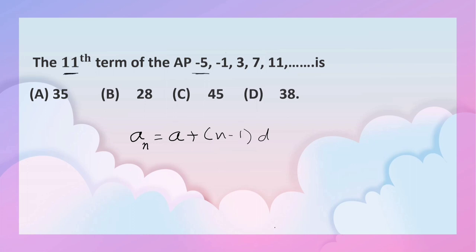d is minus 1 minus minus 5, that is 4; 3 minus minus 1, that is 4; 7 minus 3, that is 4. So definitely d is 4.